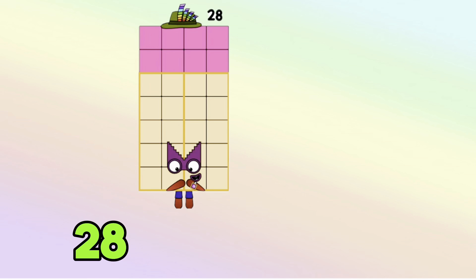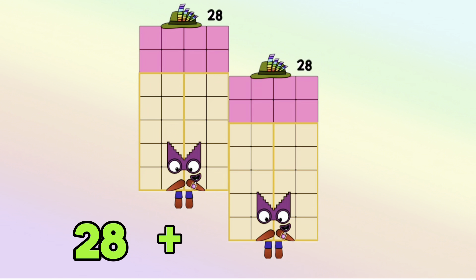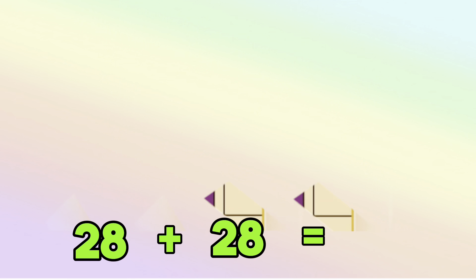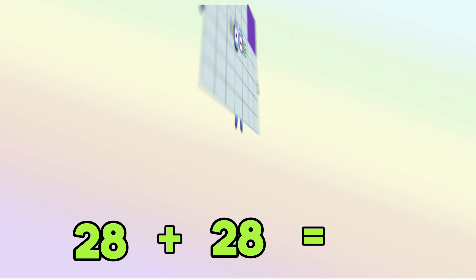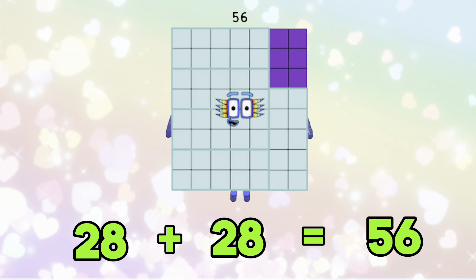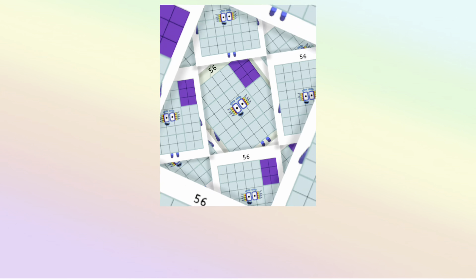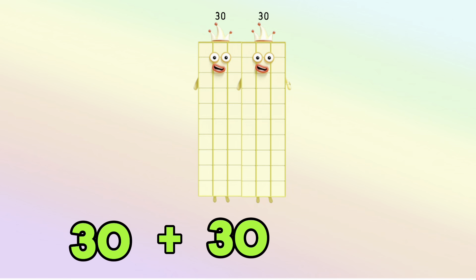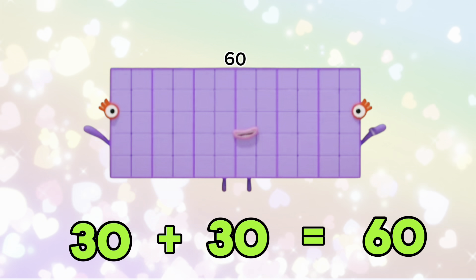28 add 28 is equals to 56. 30 add 30 is equals to 60.